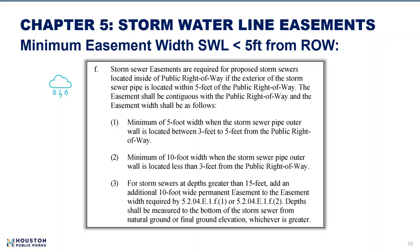Similar to water lines, new minimum easement requirements were created for storm sewers within the right-of-way where the exterior of the pipe is less than 5 feet from the right-of-way. The easement contiguous with the right-of-way must be a minimum of 5 feet from the outer wall of the sewer pipe when between 3 to 5 feet from the right-of-way. The easement must be a minimum of 10 feet when the outer wall of the storm sewer pipe is less than 3 feet from the right-of-way. Article 3 requires an additional 10-foot easement added to sub-articles 1 and 2 if depth is greater than 15 feet.